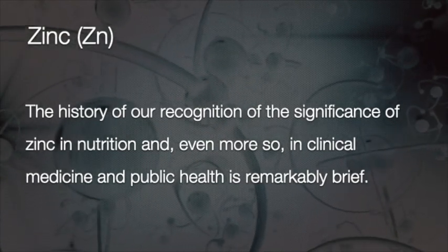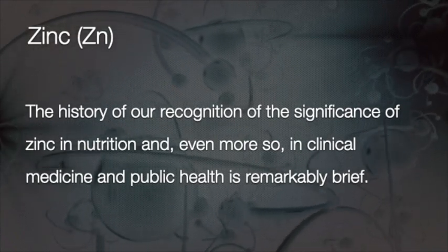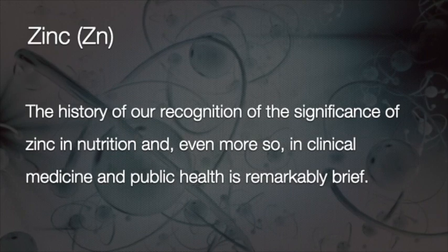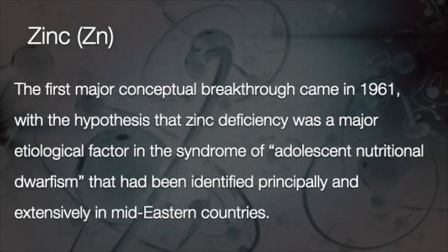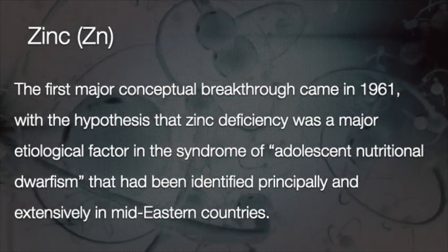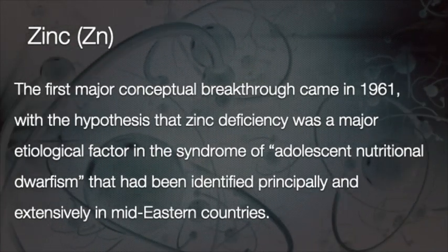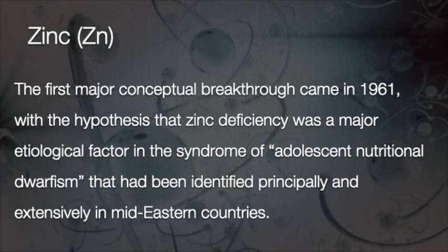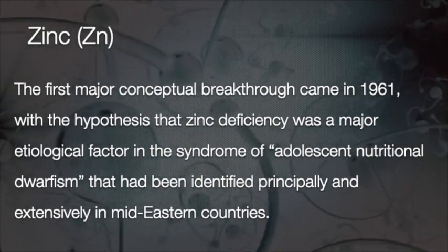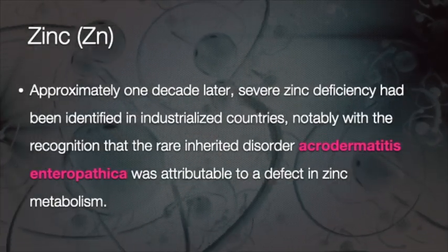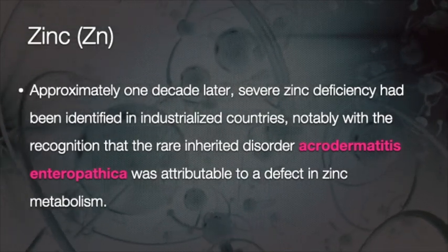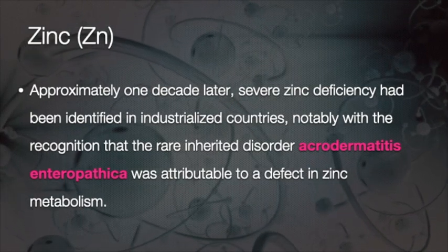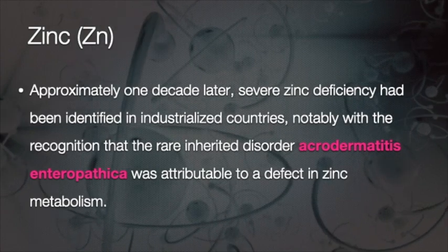The history of our recognition of the significance of Zinc in nutrition and clinical medicine and public health is remarkably brief — we didn't pay that much attention to Zinc. The first major conceptual breakthrough came in 1961, with the hypothesis that Zinc deficiency was a major etiological factor in the syndrome of adolescent nutritional dwarfism, identified principally in Middle Eastern countries. Approximately one decade later, severe Zinc deficiency was identified in industrial countries, notably with recognition that the rare inherited disorder Acrodermatitis enteropathica was attributable to a defect in Zinc metabolism.